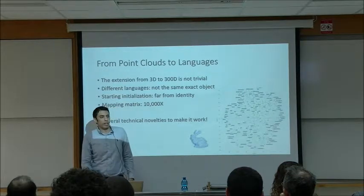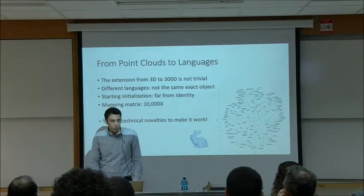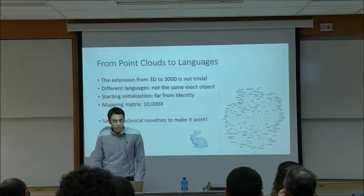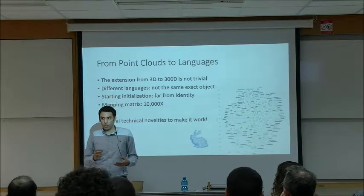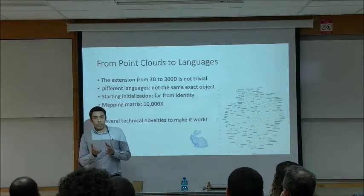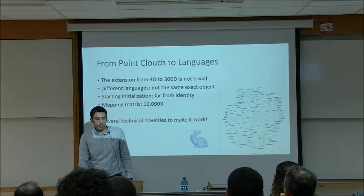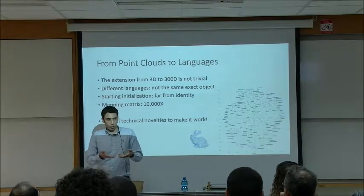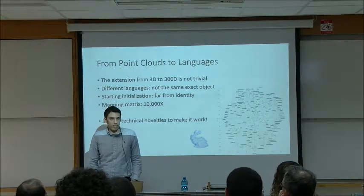Although this sounds natural, it doesn't really work for several reasons. The extension from three dimensions to 300 dimensions is not trivial. Different languages are not two different views of the same object — they have different properties. While Mikolov showed an orthogonal transformation can find a decent translation, they're not exactly the same object. We also cannot assume the transformation is small as we might in point cloud matching. And the mapping matrix is about four orders of magnitude larger.